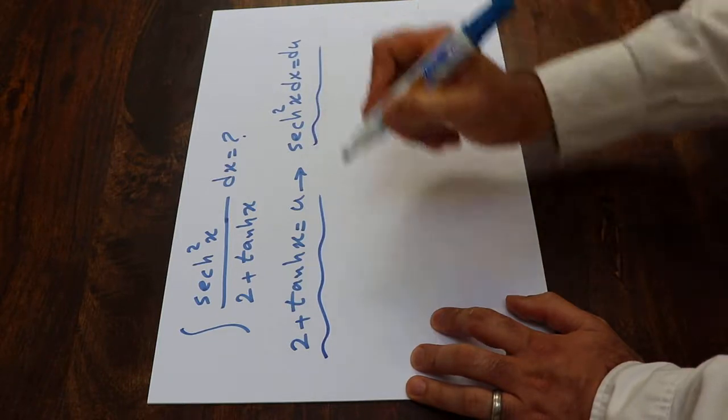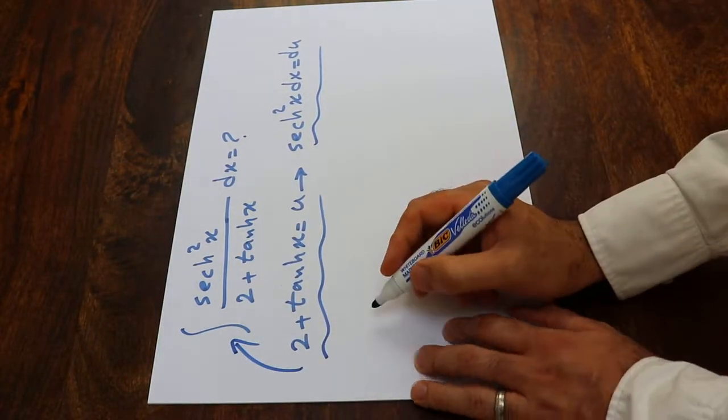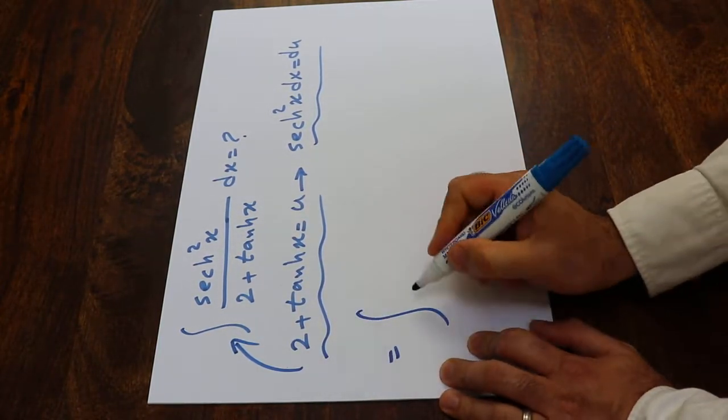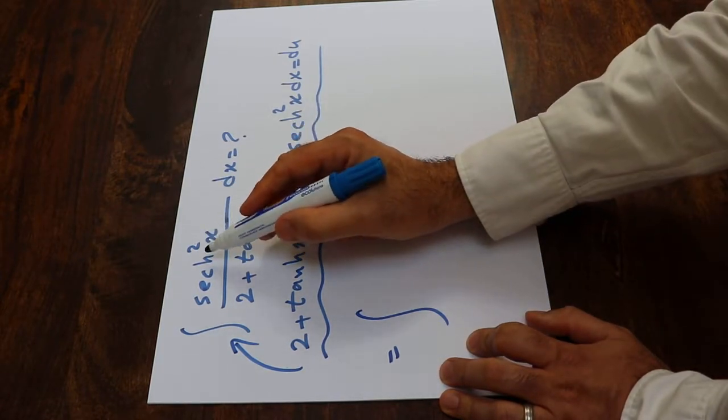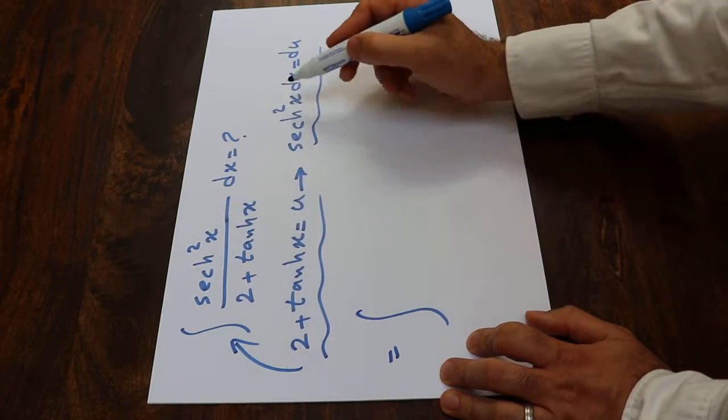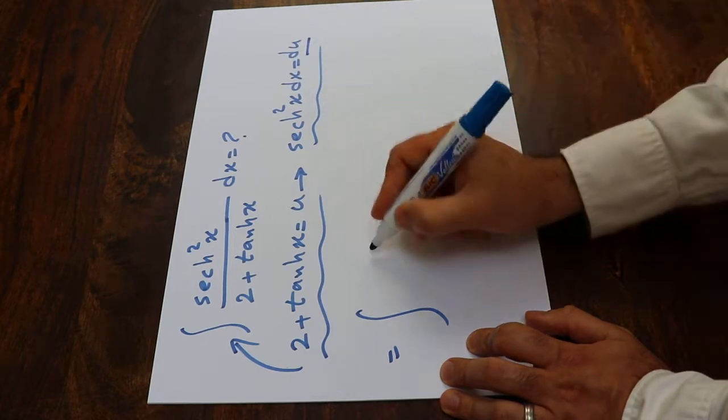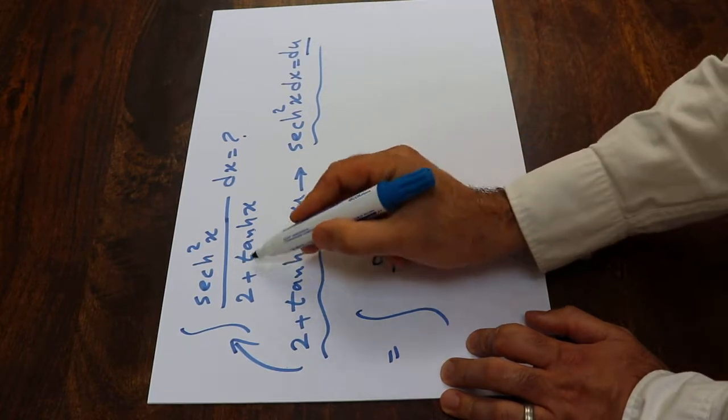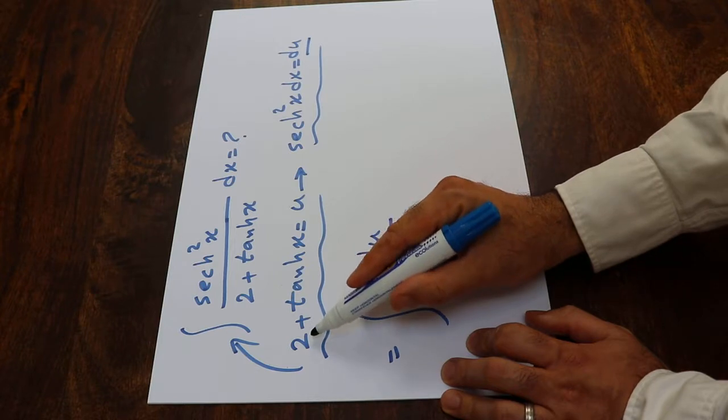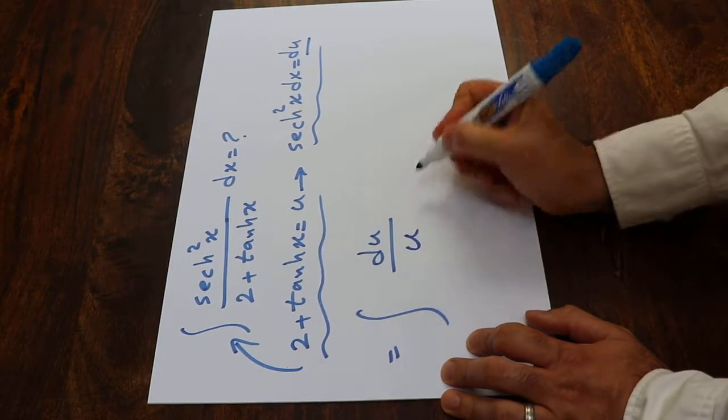Now all you need to do is substitute these two expressions into this integral. So that will be equal to integral of, instead of sech squared x dx, I simply write du, and instead of 2 plus hyperbolic tangent x, I write u.